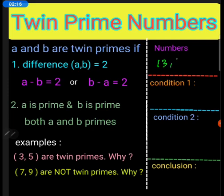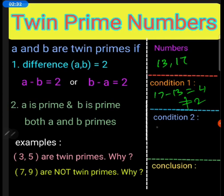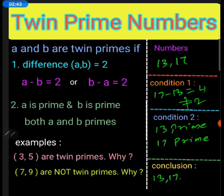Now consider 13 and 17. Seventeen minus thirteen equals four, which is not equal to two, so the first condition is not satisfied. Thirteen is prime and seventeen is also prime, so the second condition is satisfied. The conclusion is 13 and 17 are not twin primes.